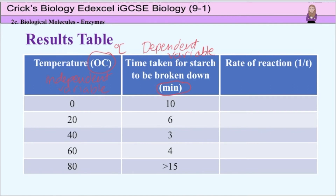To draw a graph of the results you need to calculate the relative rate of reaction by dividing 1 by the time. For example, for 0 degrees C, divide 1 by the time taken for starch to be broken down, which was 10 minutes. So 1 divided by 10 equals 0.10. This is entered into the final column.